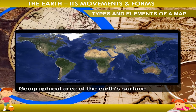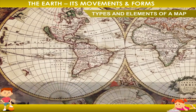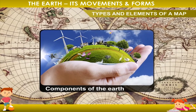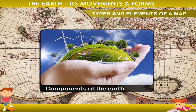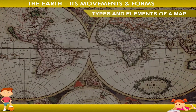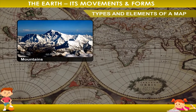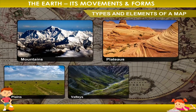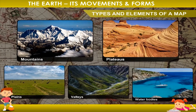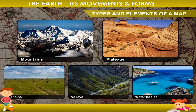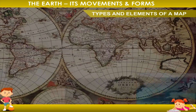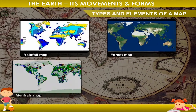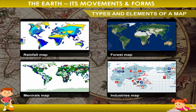Maps are useful for learning about the components of the Earth. They help us to locate various things such as mountains, plateaus, plains, valleys, and other water bodies. Maps are also drawn to show rainfall, forests, minerals, and industries.